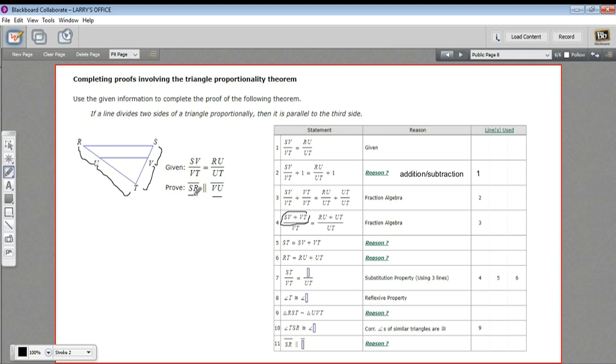And on this other side, RU plus UT, that's these two segments that make up this whole side of the triangle. So we've done some clever little fraction algebra here to get these expressions that are both sides of the triangle over VT and over UT.